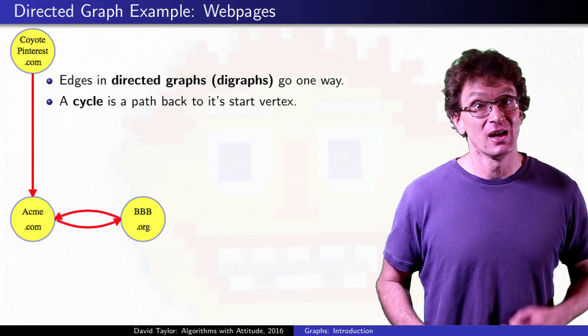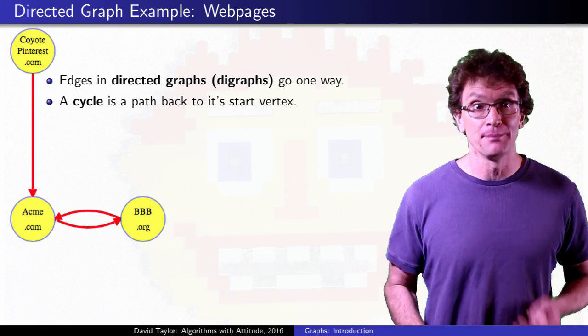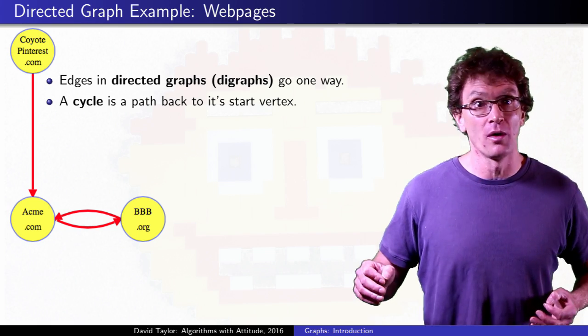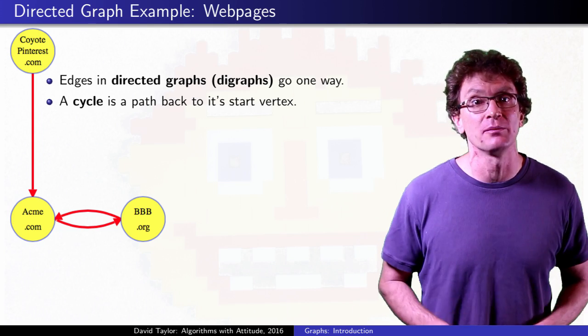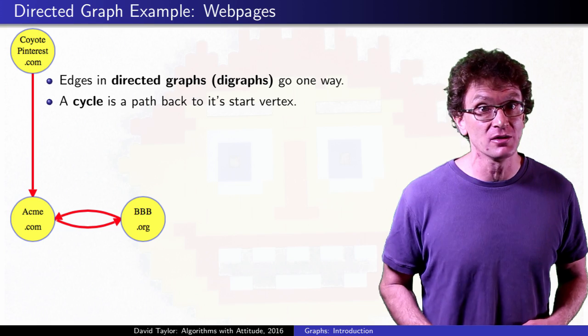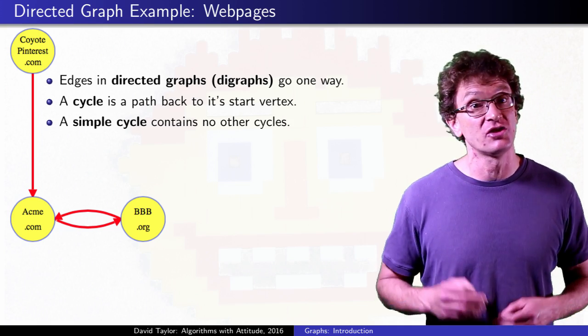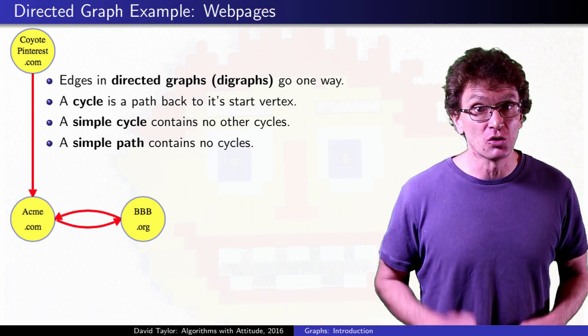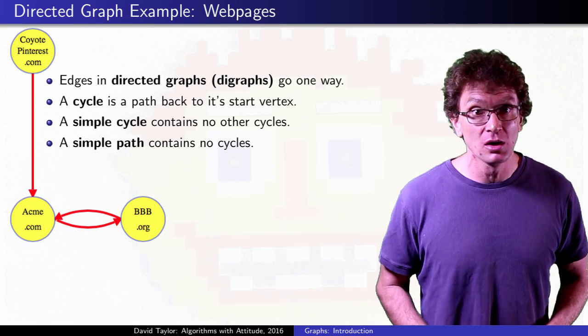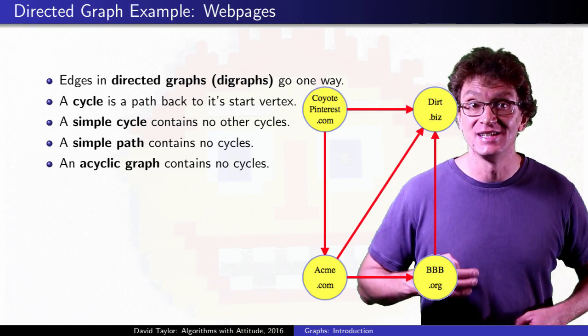For a cycle, it really doesn't matter which vertex you consider to be the starting vertex. If you go A to B to A, or B to A to B, those are the same cycle. If a cycle contains no smaller cycles, it's called a simple cycle, and if a path has no repeated vertices, it's called a simple path. Directed graphs with no cycles at all are called directed acyclic graphs, or DAGs.